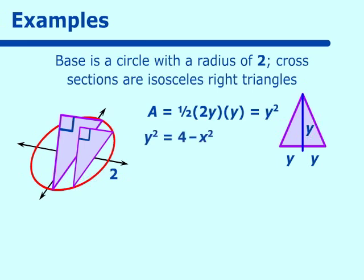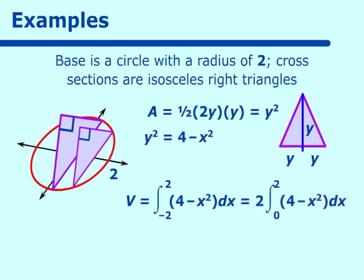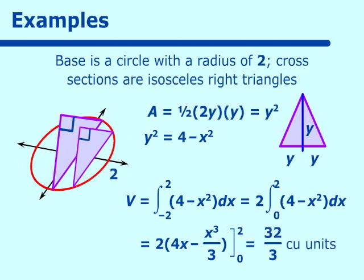So we have y² = 4 - x². And in this one, when we build our volume, it equals 4 - x². And we are going from -2 to 2. Or we can redo this and say the volume equals 2 times the integral from 0 to 2 of (4 - x²) dx. And once we integrate that, we get 2 times (4x - x³/3). And we're going from 0 to 2. And we get a final answer of 32/3 cubic units.